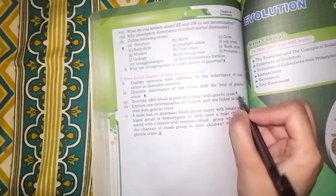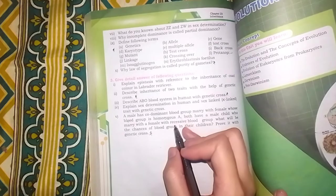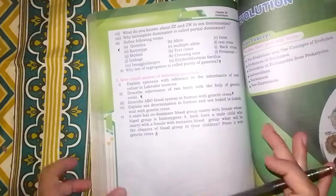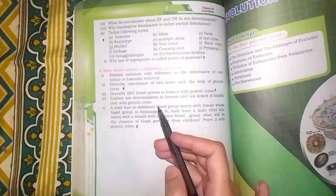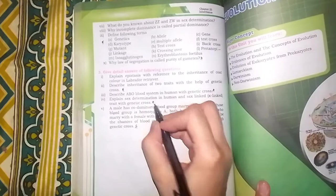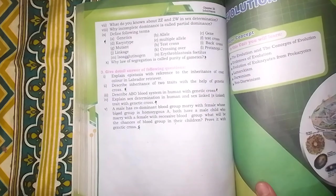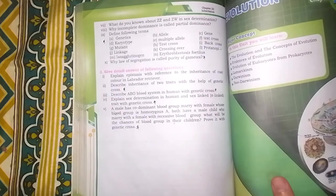In this chapter, it is most important for MCQs: sex determination in humans and sex linked traits with genetic crosses. I have told you that it is most important and necessary to do all these questions. Do not leave any of these questions.